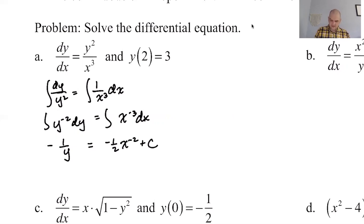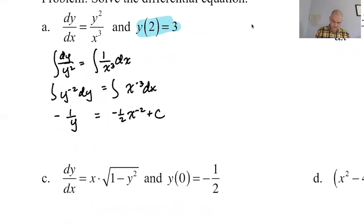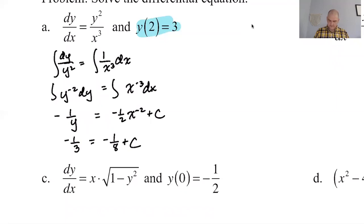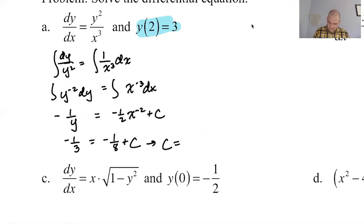Now let's use the initial condition. Plugging in — y = 3 gives -1/3, and x = 2 gives -1/(2·4) = -1/8. So we have -1/3 = -1/8 + C. Solving, C = -1/3 + 1/8. Getting a common denominator of 24: that's -8/24 + 3/24 = -5/24. So C = -5/24.